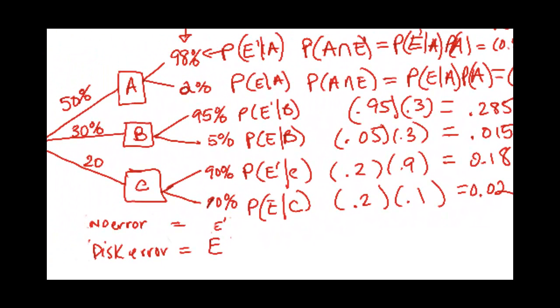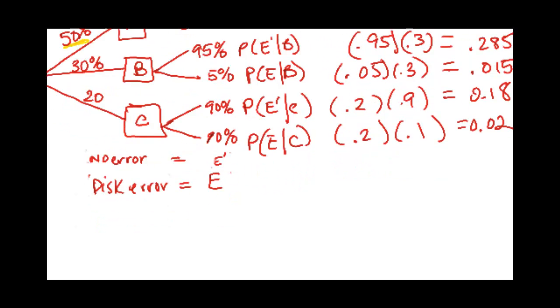Again, refreshing your memory, it's going to be taking the conditional probability times the probability of the condition to get the intersection of those two events. All right. So now I could ask you something like,